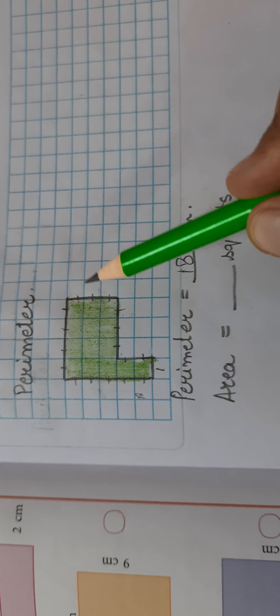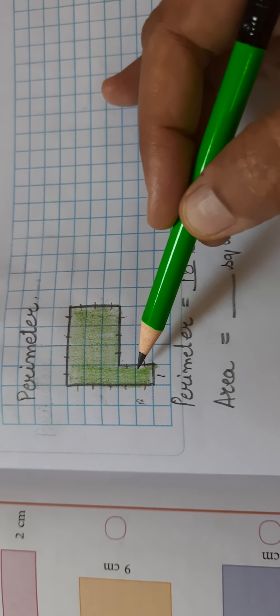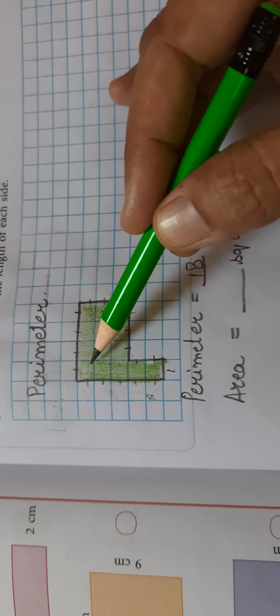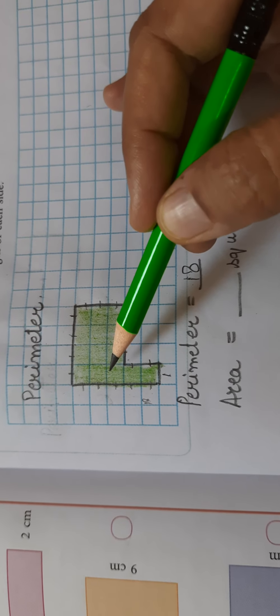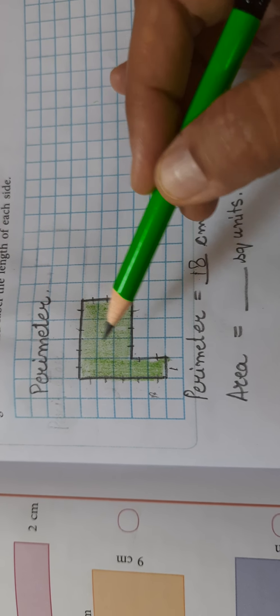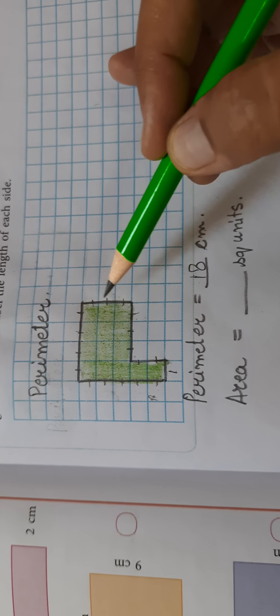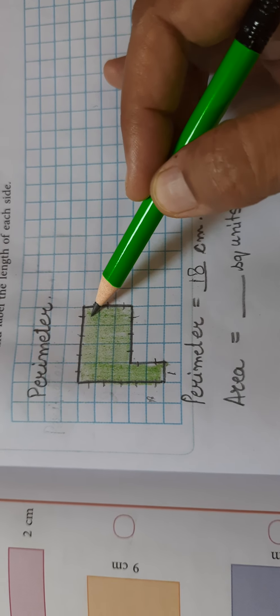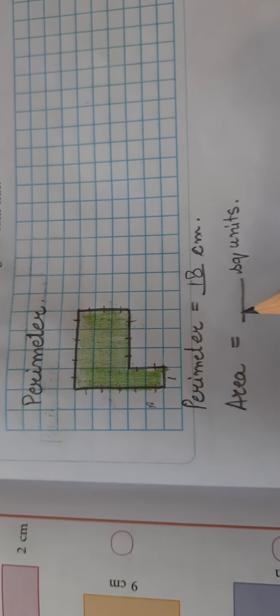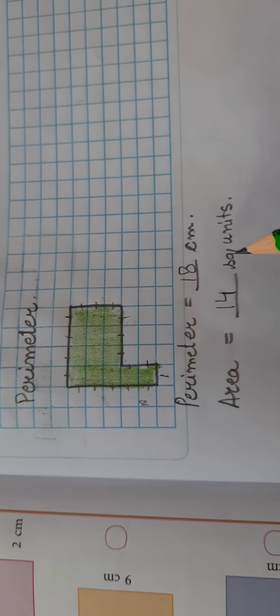Right, so let us count this. The number of blocks I am counting here: 1, 2, 3, 4, 5, 6, 7, 8, 9, 10, 11, 12, 13, 14. So I will write this as 14 square units.